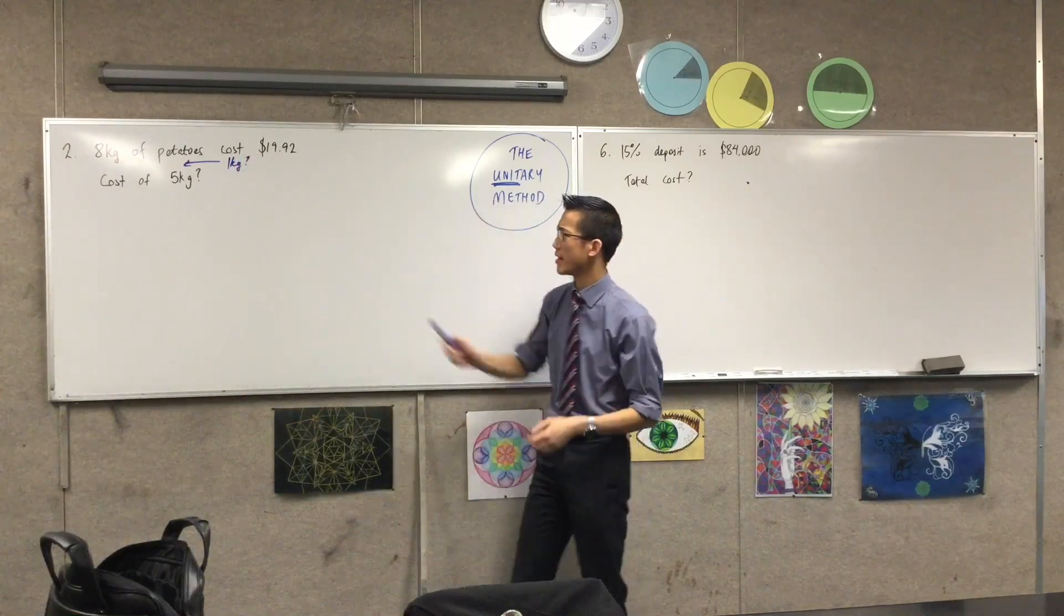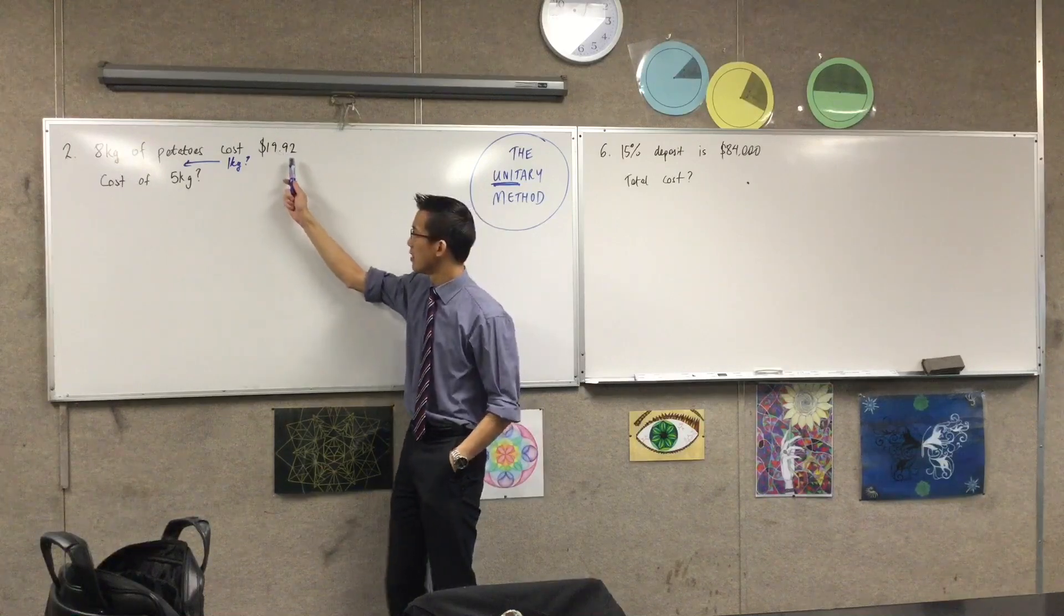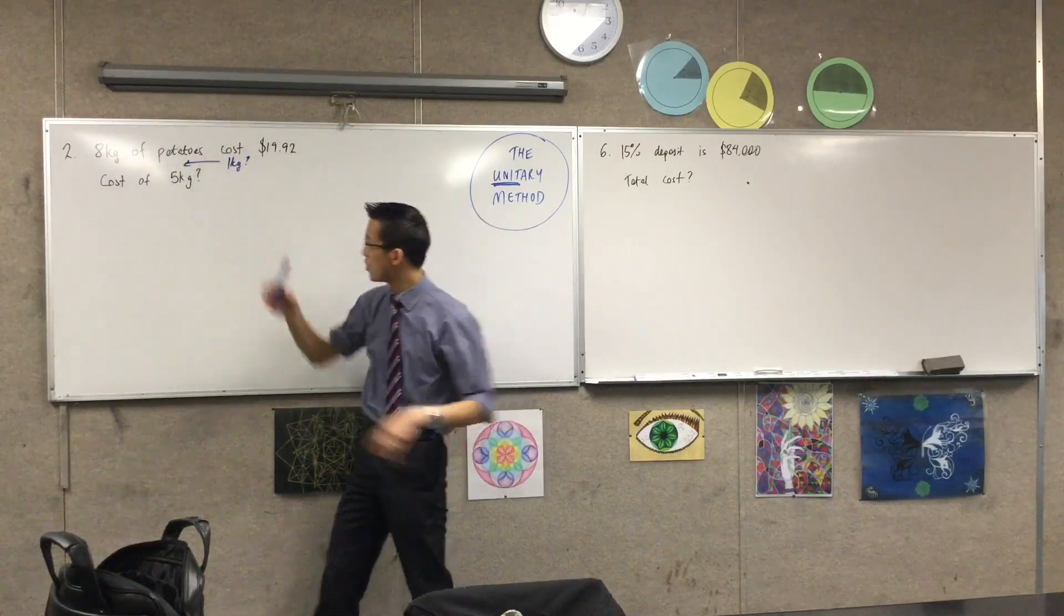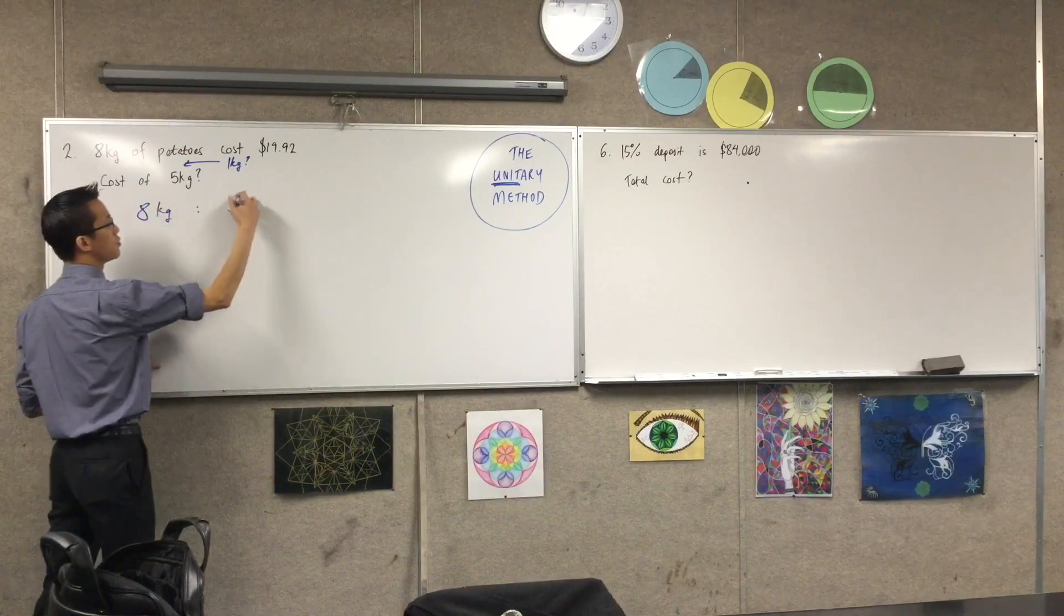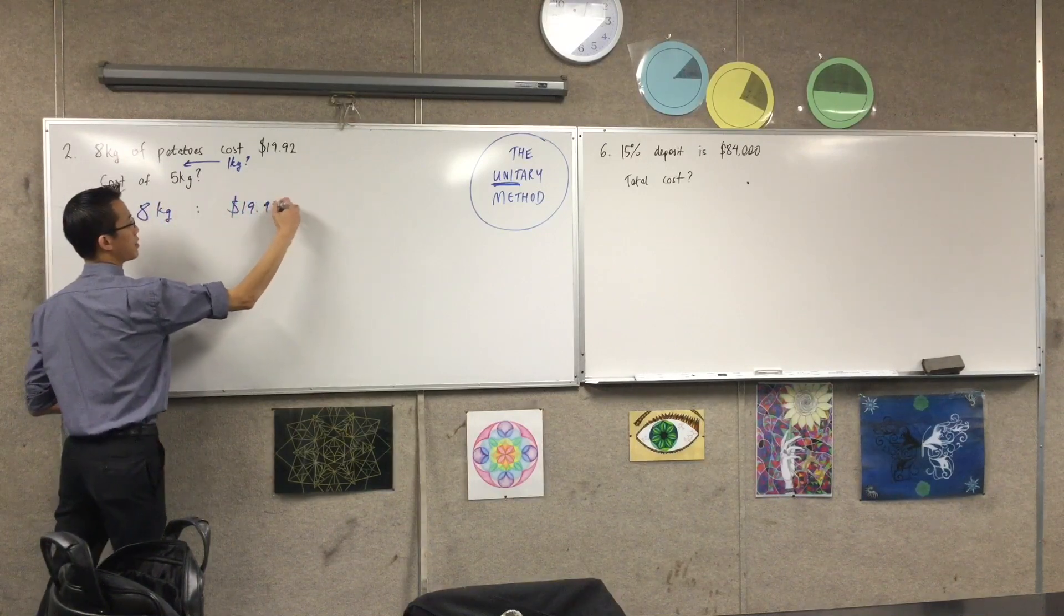So in order to get to there, you're going to take this amount, and you want to think, right, this is a ratio. So if I say eight kilos to 19.02, or rather write it as a rate, because I've got different quantities here,